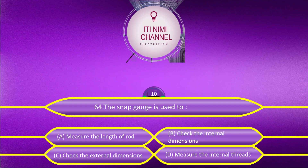The snap gauge is used to: Option A, measure the length of the rod. Option B, check the internal dimensions. Option C, check the external dimensions. Option D, measure the internal threads. The answer is: check the external dimensions.